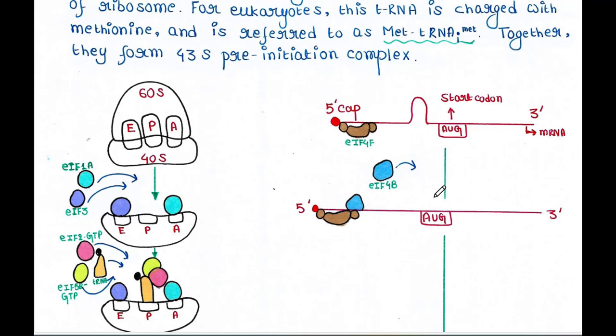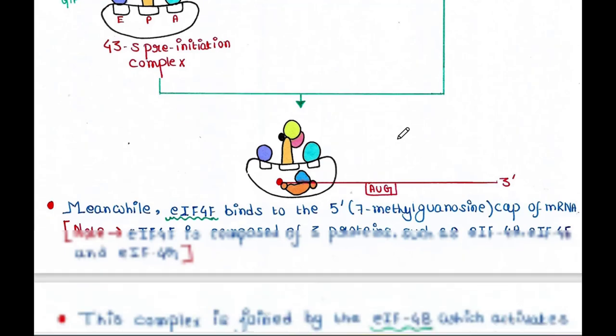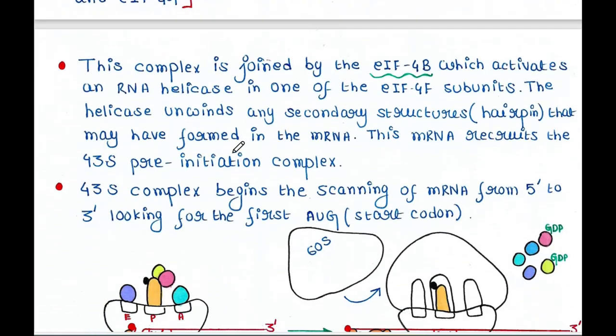So you see, this mRNA has many secondary structures like this: many hairpins, many loops, many secondary structures are there. So that helicase activity is required to open those secondary structures. And helicase unwinds any secondary structure such as hairpin that may have formed in the mRNA.